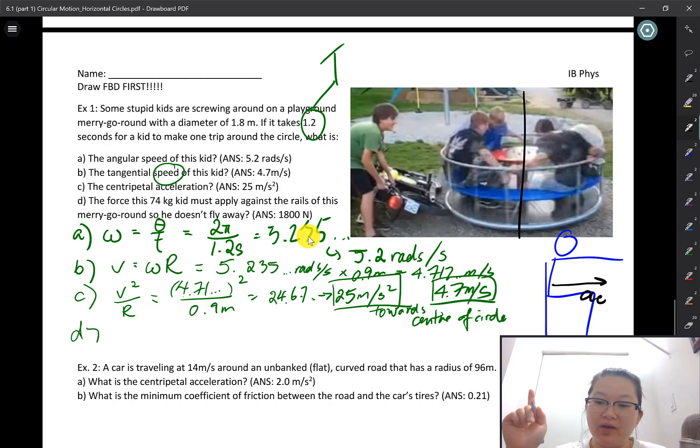To apply a force that will allow him to have that acceleration, which means going around in a circle, we have to look at Newton's second law. The net force is equal to his centripetal acceleration times the mass. That's ma, but his a is going to be the centripetal acceleration towards the center of the circle.